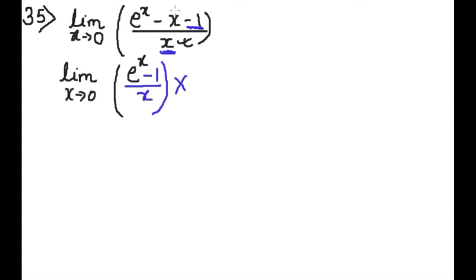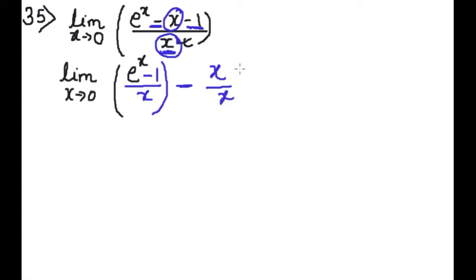यह वाला x, minus sign यहां देंगे, अब यह x और यह x — यह multiplication में है सबके साथ, तो हम अलग-अलग लिख सकते हैं। हम इस fraction को ऐसे लिखेंगे, अब यह x और x cancel हो गया।